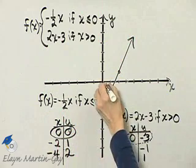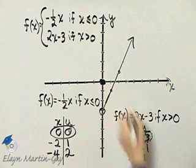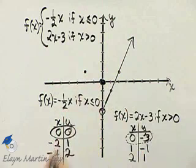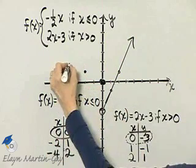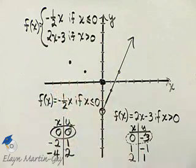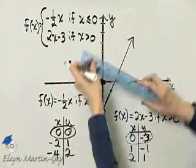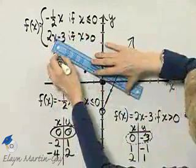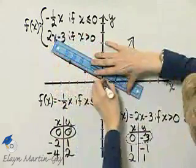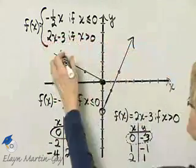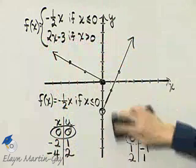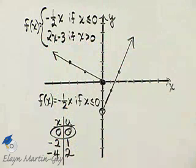All right, I have zero, zero, and that is a solid point. Negative two, one, and negative four, two. And that's the other piece of this piecewise defined function. Now notice, this does pass the vertical line test. This is a function, and I'm going to erase these pieces so you can see it a little bit better.